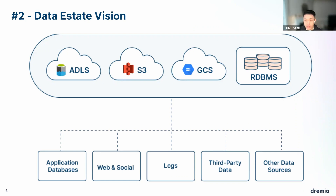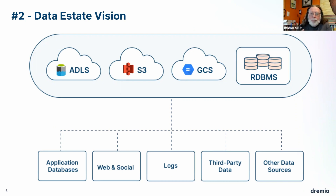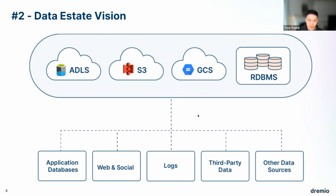For hybrid and on-prem scenarios, organizations in financial services or healthcare must keep some data on-prem for compliance — they need to manage customer data privacy. Every industry is different, so it's not a one-size-fits-all move to cloud. We even see people moving to cloud and then repatriating some data back on-premises for security or compliance reasons.